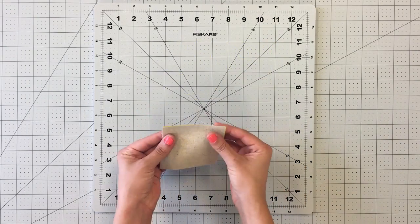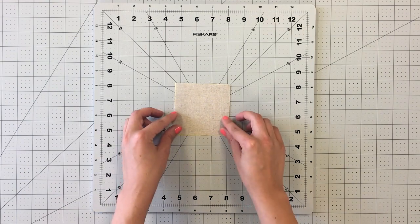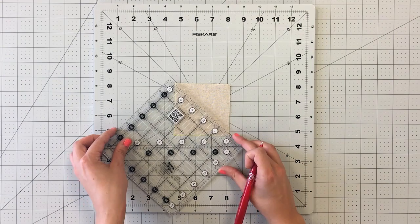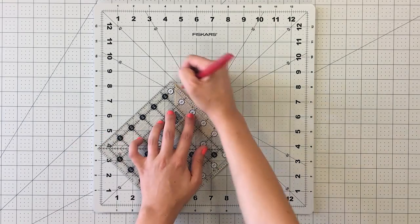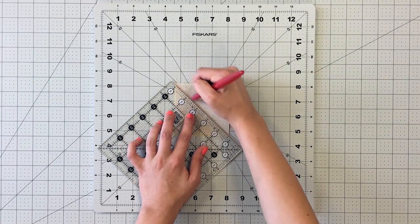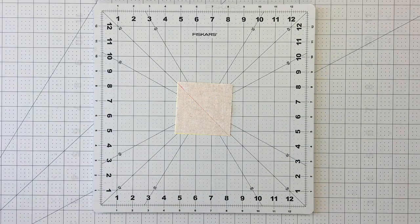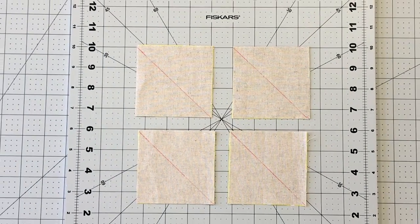Place a three and a half inch square from fabric B and D right sides together. With a fabric pen, draw from one diagonal to the other. Repeat this same process to create a total of eight B and D half square triangles. Each set of squares will give you two half square triangles.